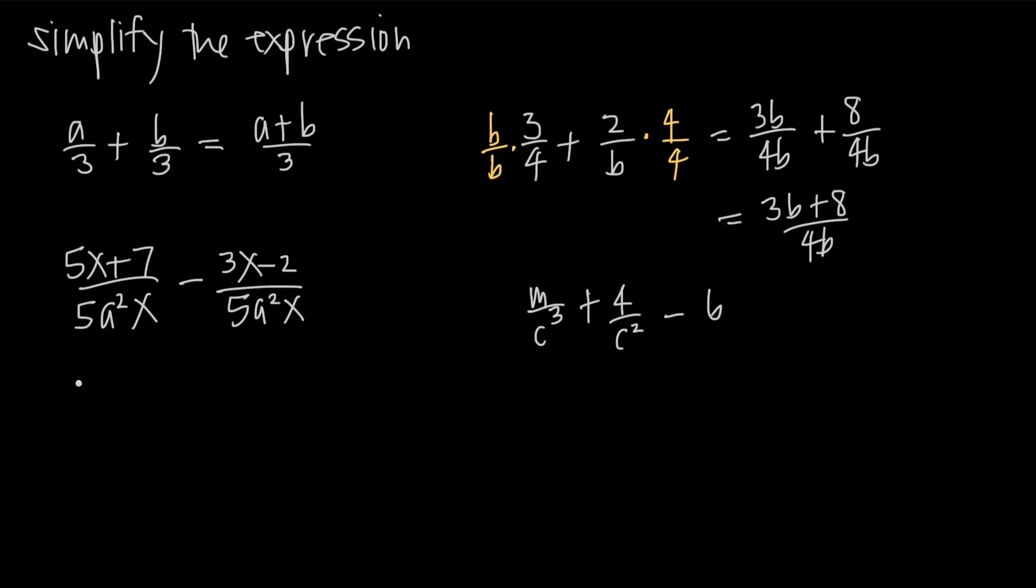But the numerator, we take the 5x+7, and then we have subtraction. This subtraction is not just minus 3x. The subtraction applies to the 3x and the negative 2, so we have to put a minus sign and then in parentheses put 3x-2 so that we make sure we apply the negative sign to both terms of this second fraction. Now we'll distribute the negative sign across the quantity 3x-2. We'll get 5x+7-3x. Negative times a negative 2 is a positive 2, so minus a negative 2 is plus 2. And in our denominator, 5a²x.